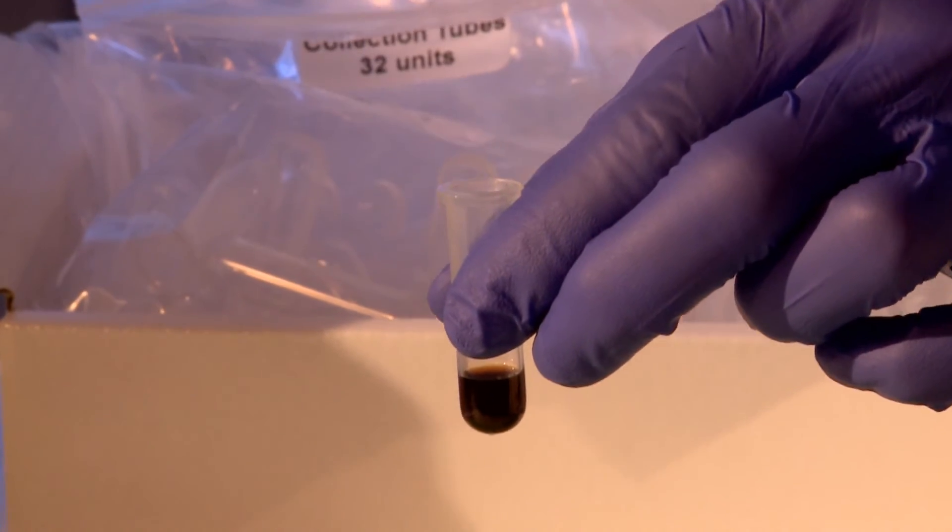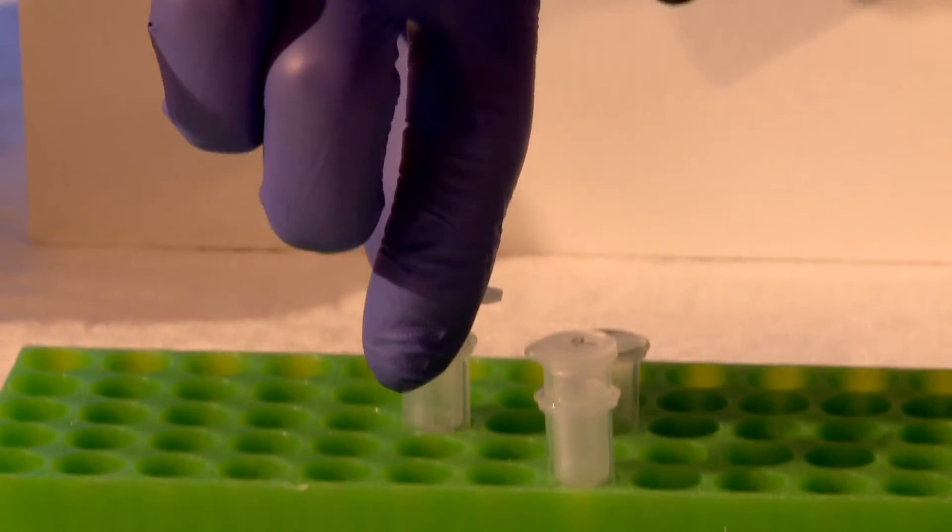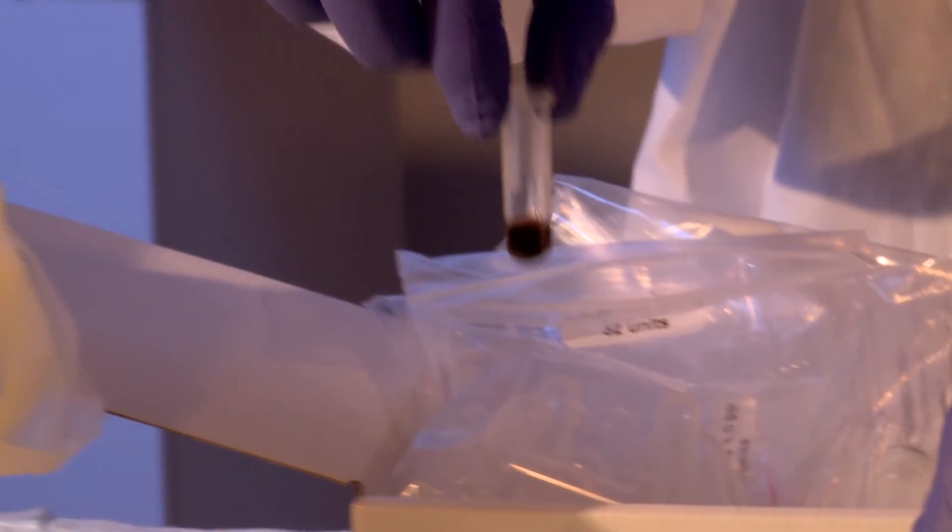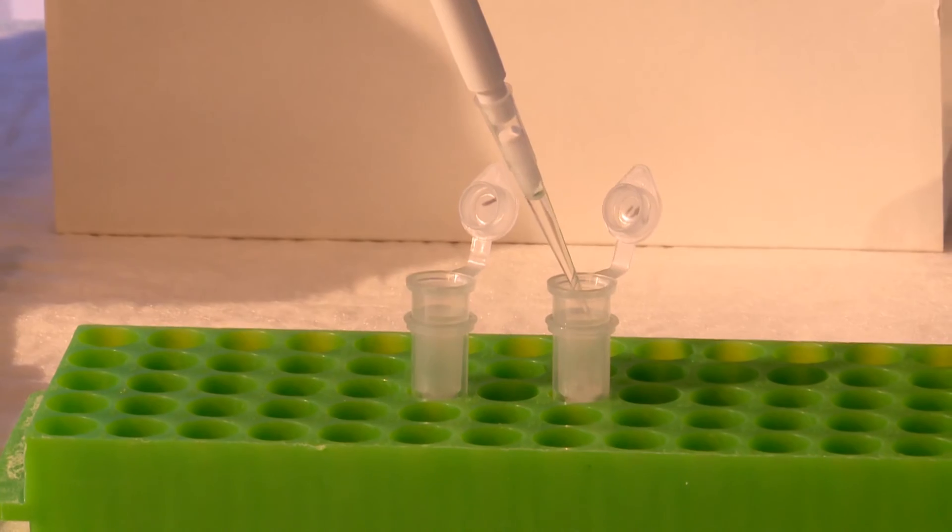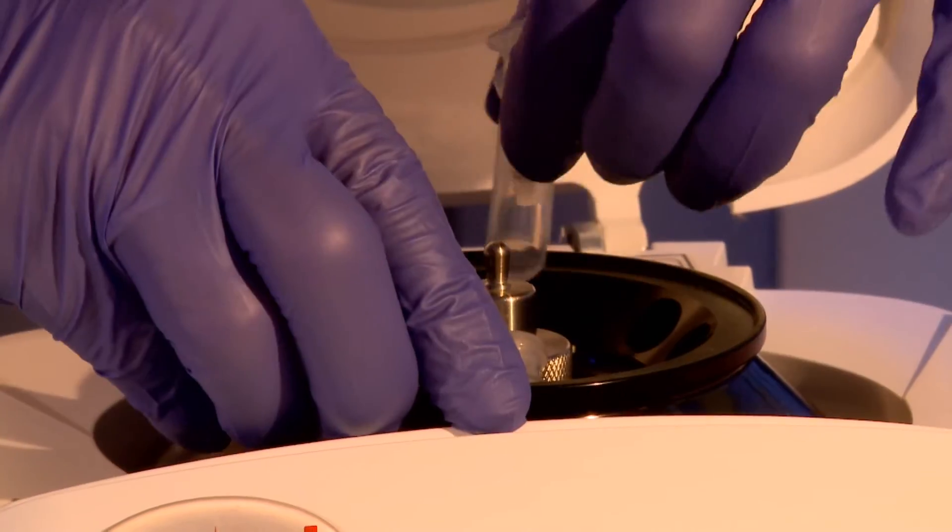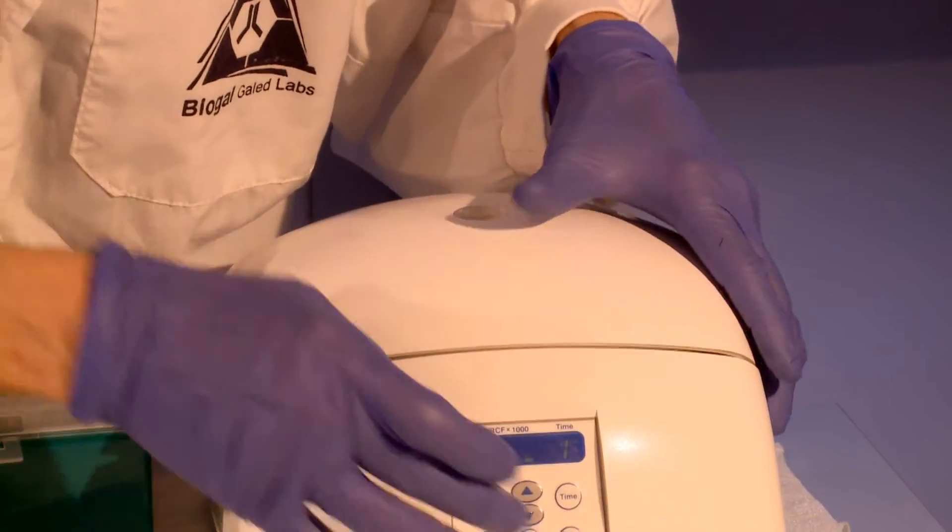Remove the column and place into a clean collection tube. Discard the dirty collection tube into a biohazard bin. Add 200 microliters of buffer B to the spin column and centrifuge at 10,000 G for 1 minute.